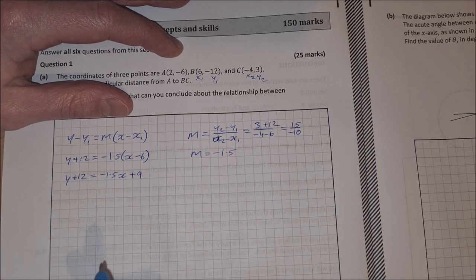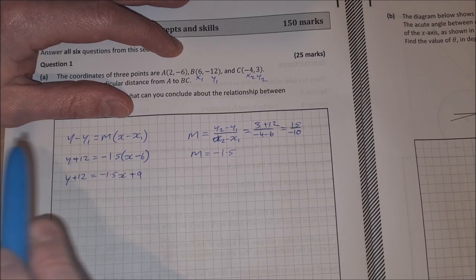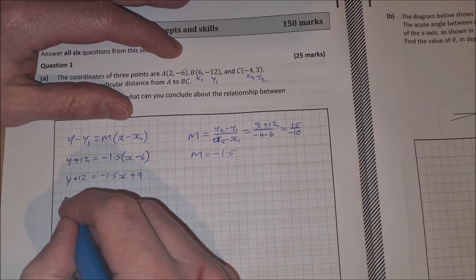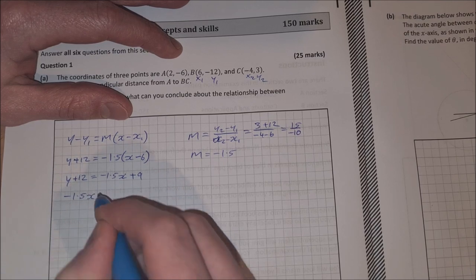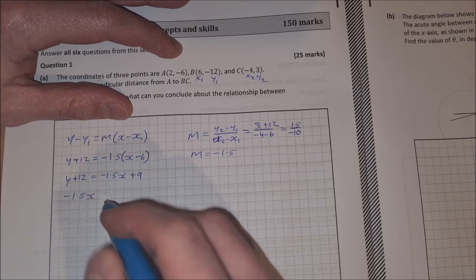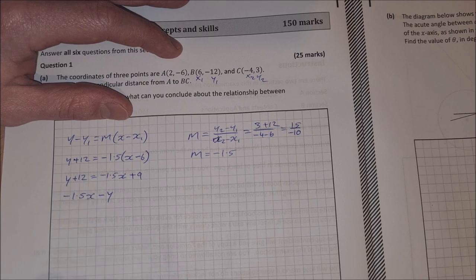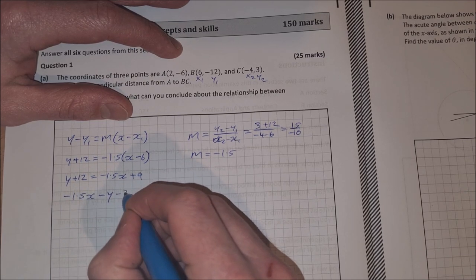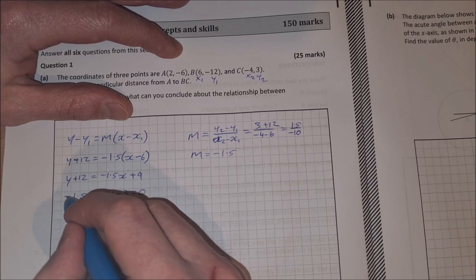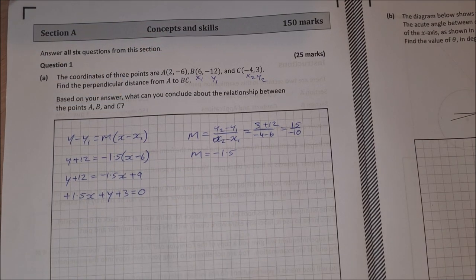Now I want everything in the form of ax plus by plus c, so everything to one side. So I'm going to keep everything just on this side here. If it's -1.5x, then I would have -y by bringing that over, and then I would have 9 minus 12 is -3 equal to 0. And I can make that easier for myself just by multiplying across by -1 to get 1.5x plus y plus 3 is equal to 0.